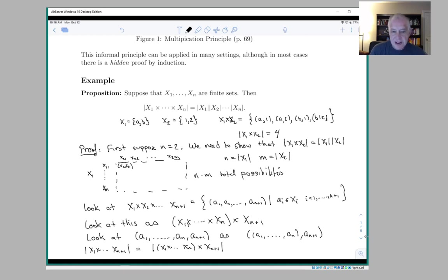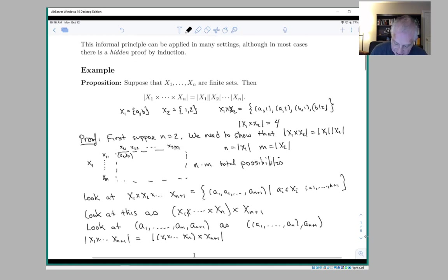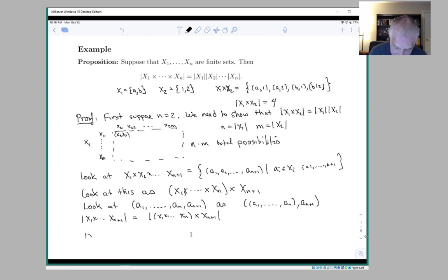And now we can use our inductive hypothesis, because our inductive hypothesis says that the number of elements in x1 up to xn crossed is a1 up to an. And the two case says that the number of elements in x1 cross xn cross xn+1 is the number of elements in the first set times the number of elements in the second set, which is a1 times up to an times a_n+1. And that's what we were trying to prove.